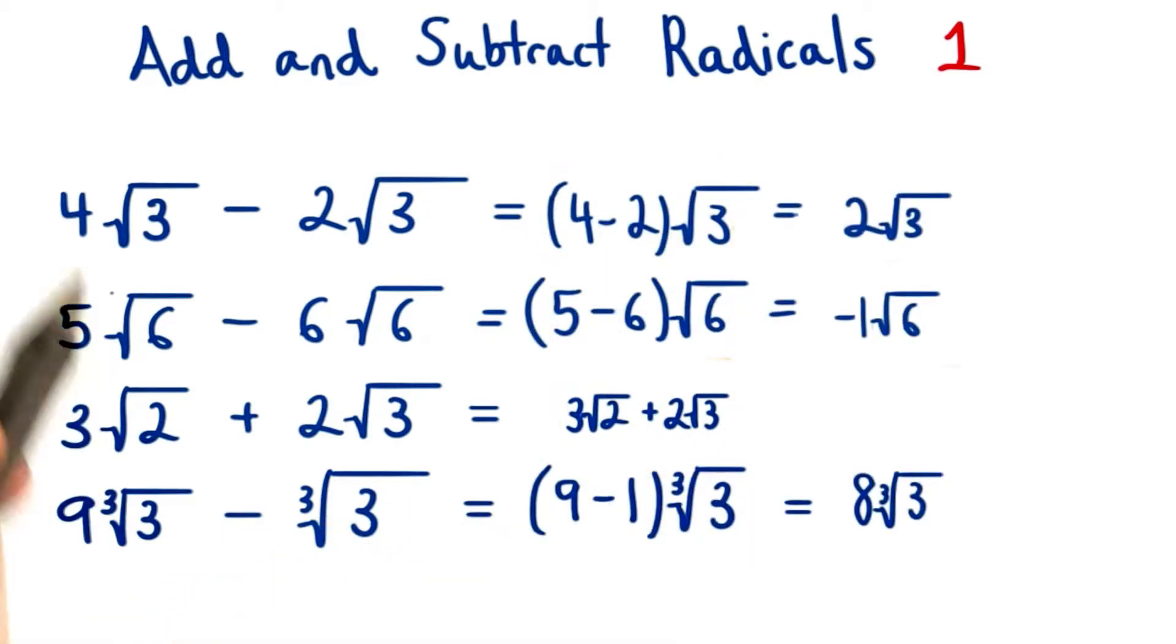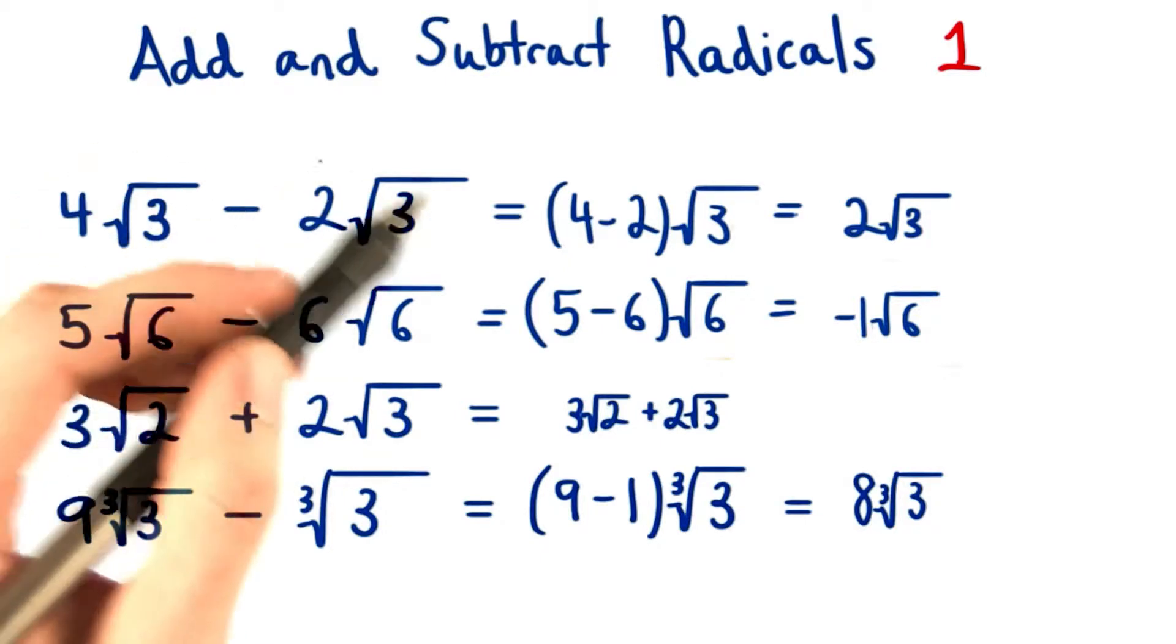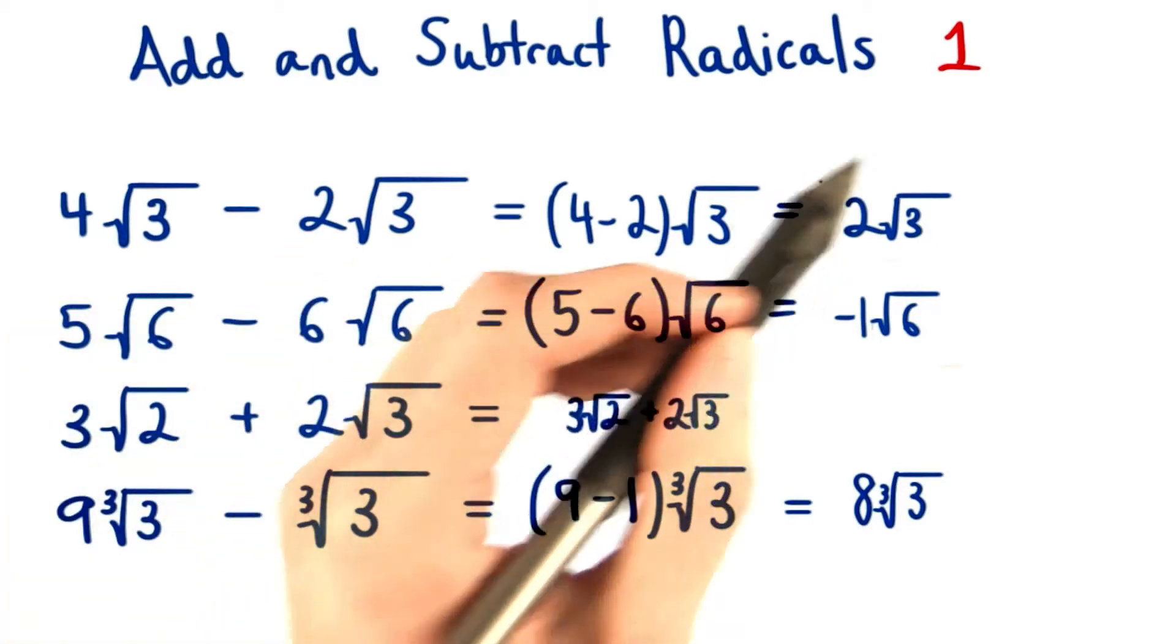Here's a little bit more work to make it more clear. We have 4√3 minus 2√3. So if I have 4 of these root 3's and I subtract 2 of these root 3's, I'm left with 2 of the root 3's.